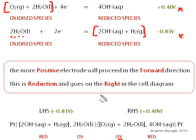Now, having done these a few times, you might sort of notice a bit of a shortcut that you can make. The more negative electrode is proceeding in that direction, the reverse direction, the more positive in the forward direction.